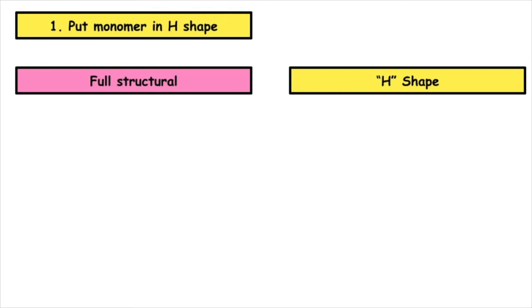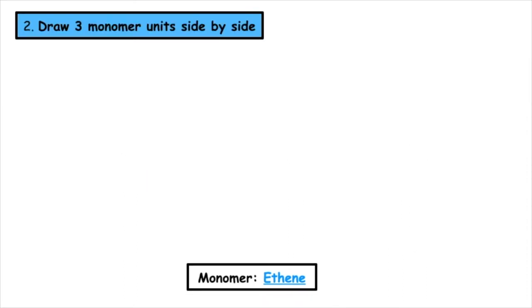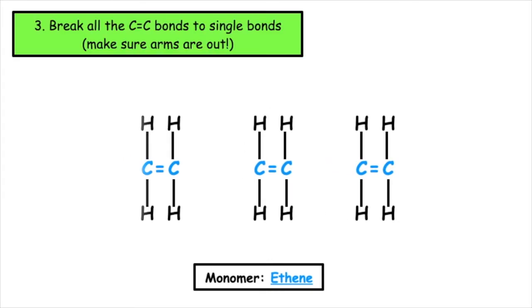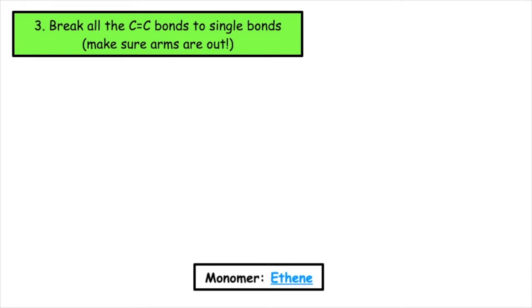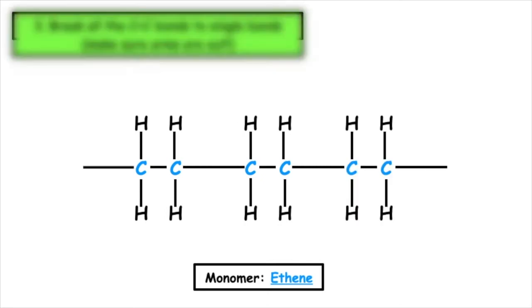Step number one, put the monomer into the H shape. The monomer that we are going to use is ethene. So we're going to draw one of these and pop it into the correct shape. Step number two is to draw three of the monomer units side by side. Step number three is to break all of the carbon to carbon bonds to form single bonds. We need to make sure that the arms are out.